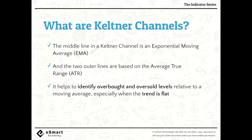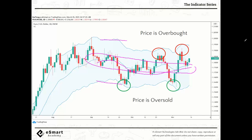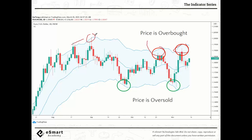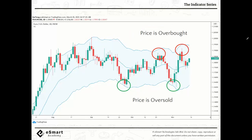As a volatility indicator, KC helps traders identify overbought and oversold levels. You can see the middle line — that's your EMA — and you have the upper and lower lines, which is your ATR. This indicator tells you where the overbought and oversold conditions are. If price is trading above the top line, that's overbought, meaning price has moved up too much and there's a high chance it will come back to the middle. If price is at the bottom, there's a high chance it will reverse and go back to the middle.